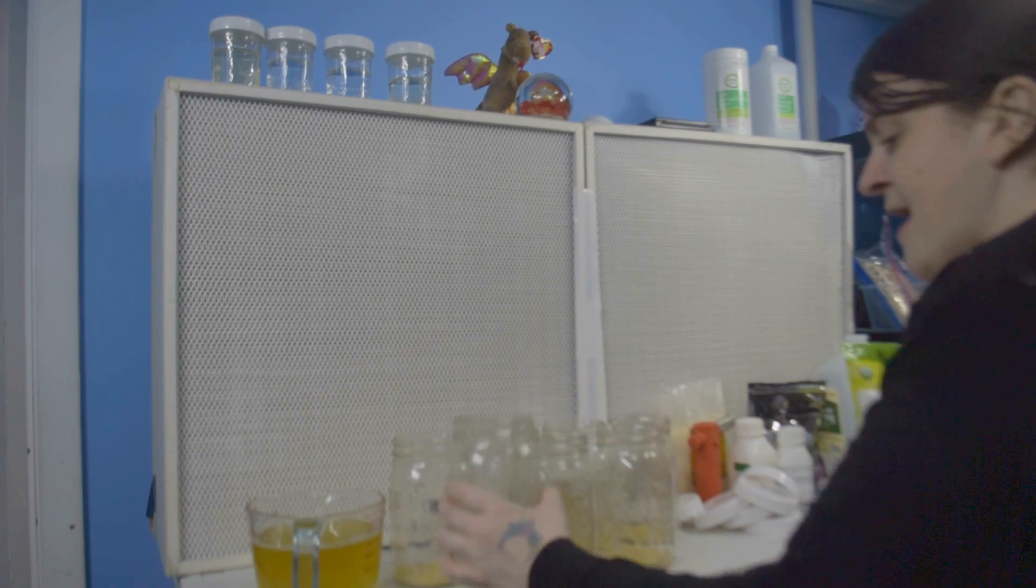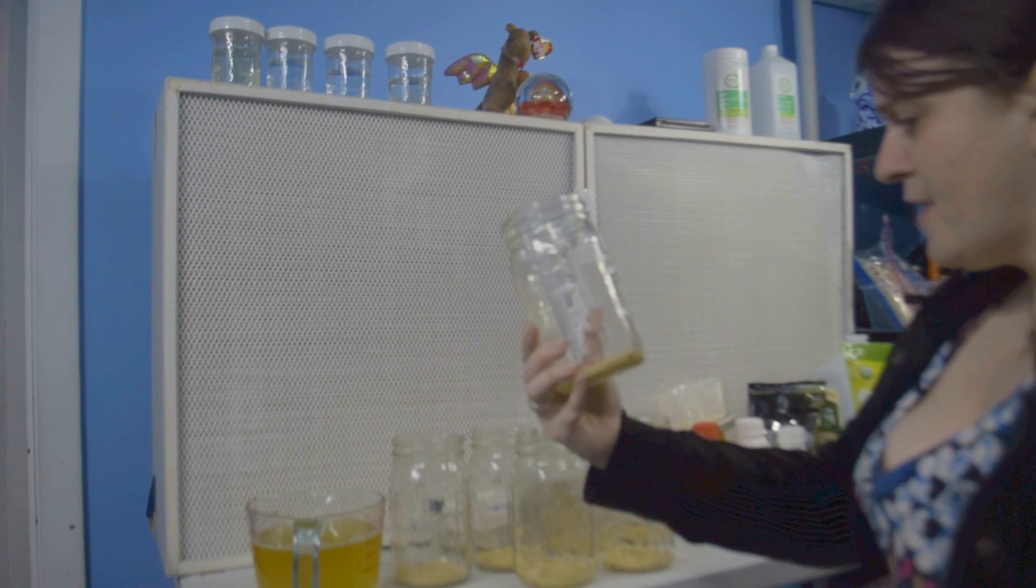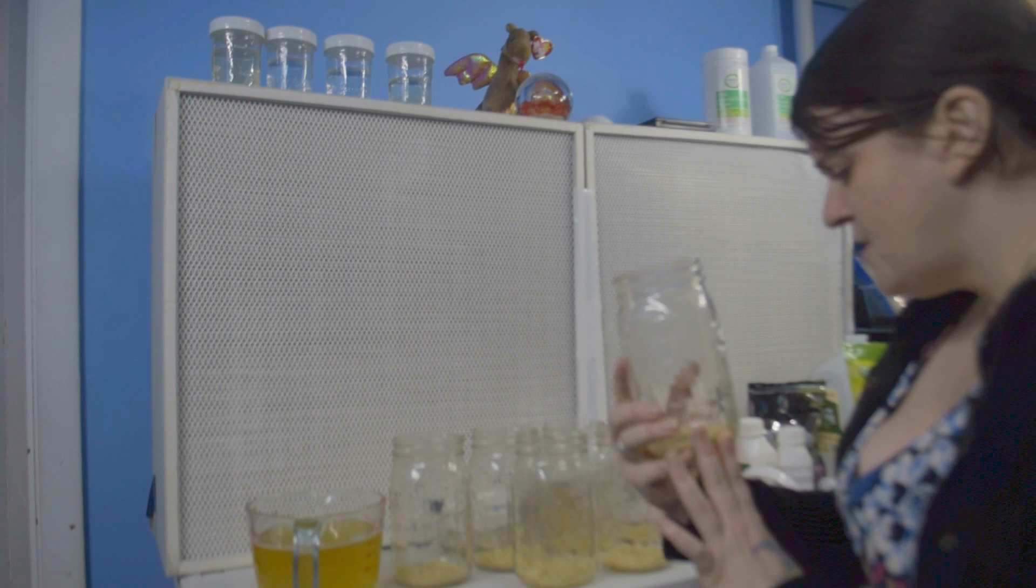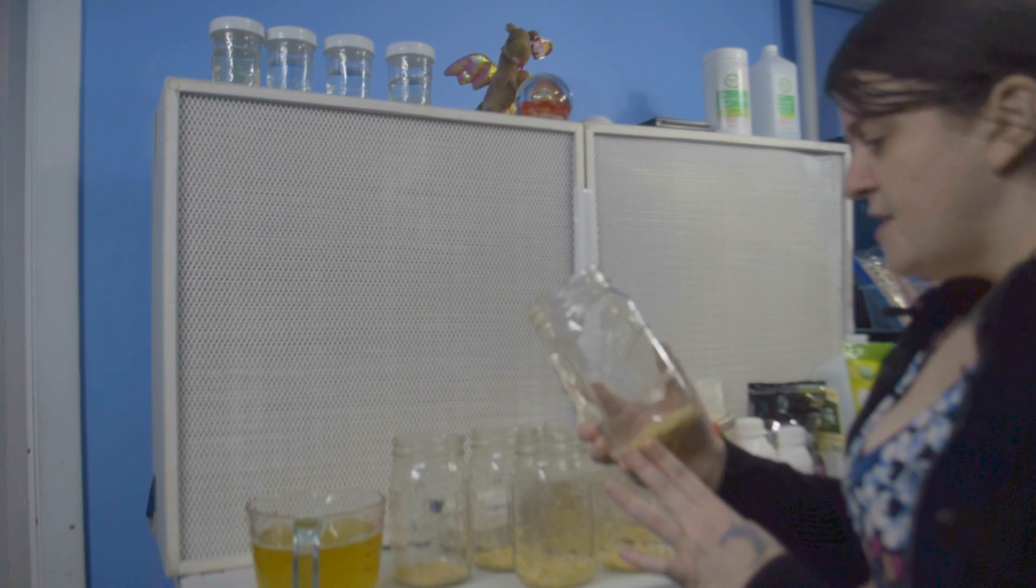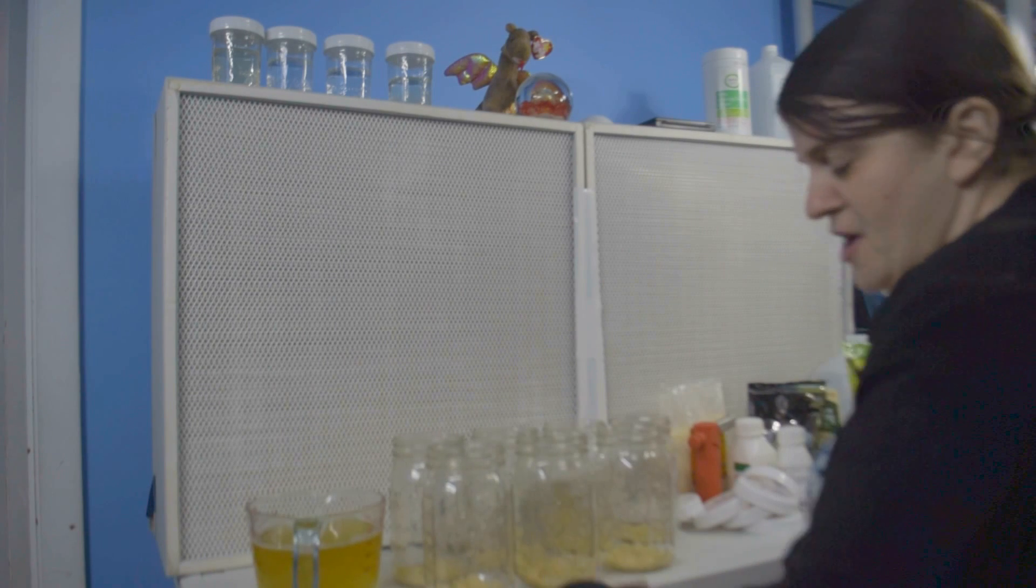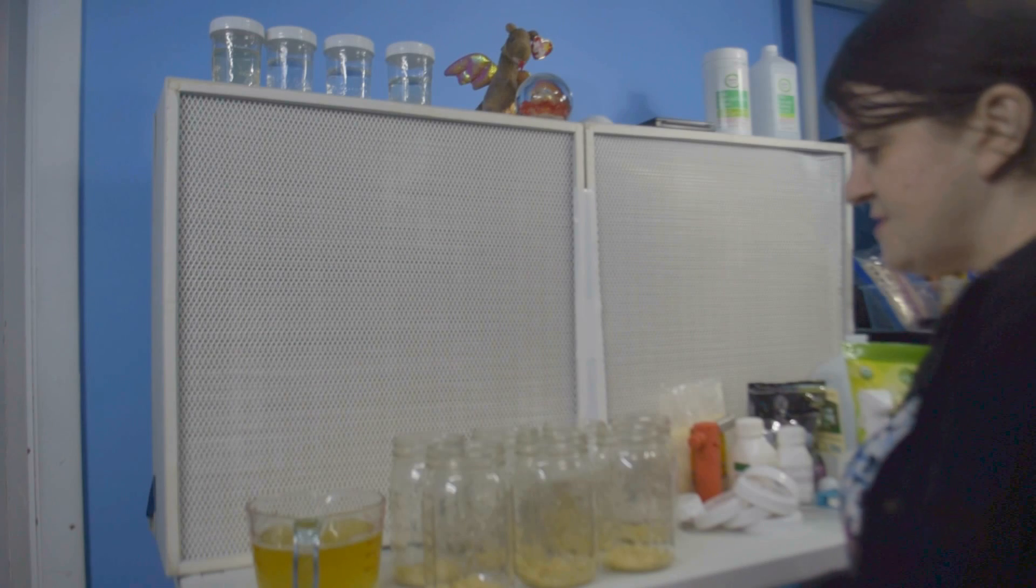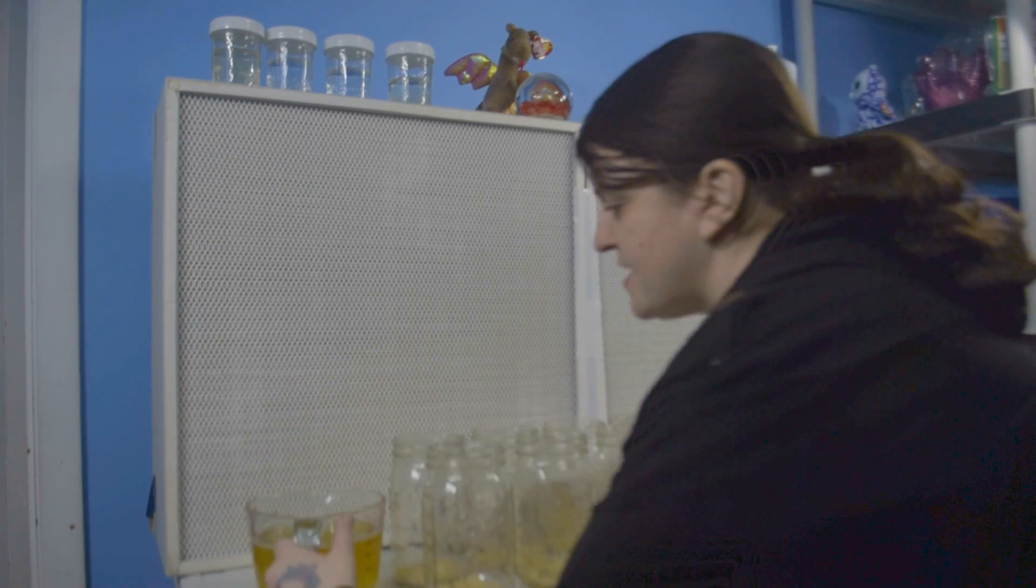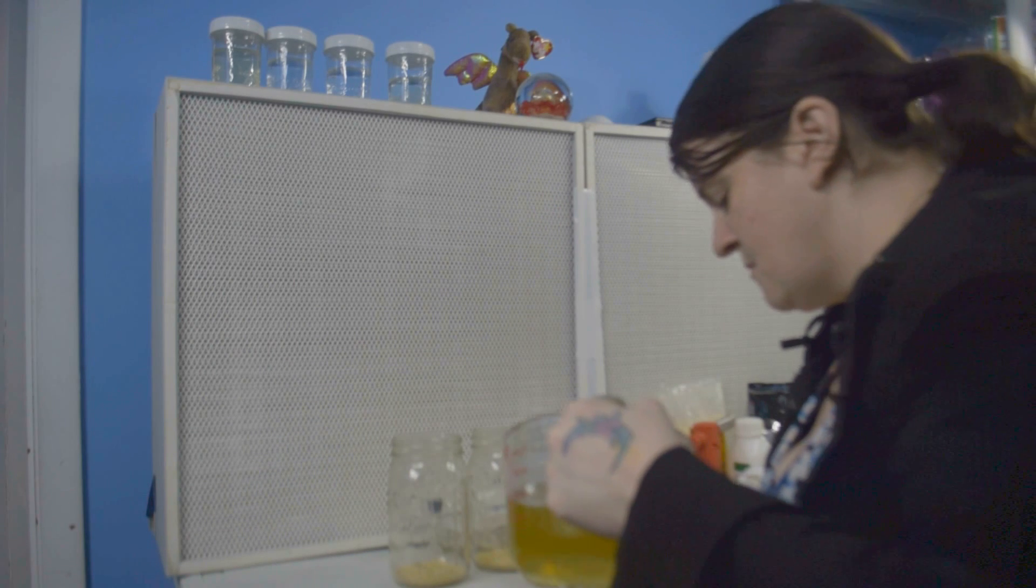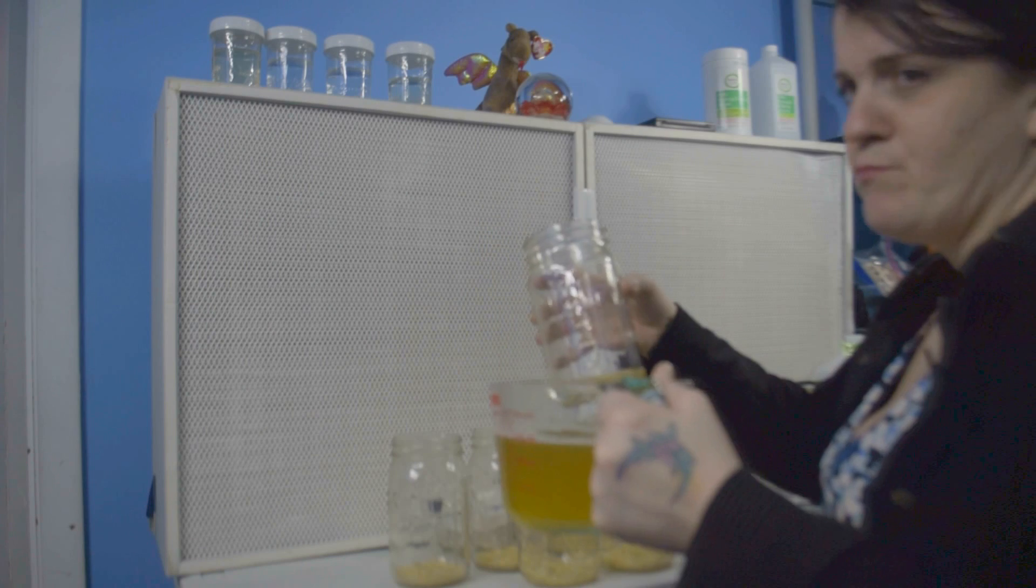In the jars I have just a very small amount of rice because I think it was William who told me that you don't need a lot of rice, just a little bit of rice. So I just covered the bottom so that you couldn't see any glass. And I'm going to add a little bit of this broth to each one of these jars.